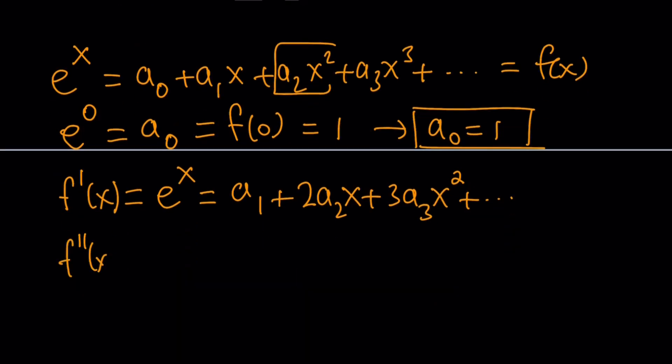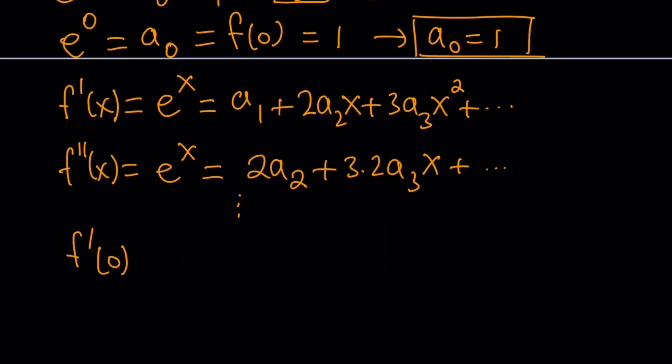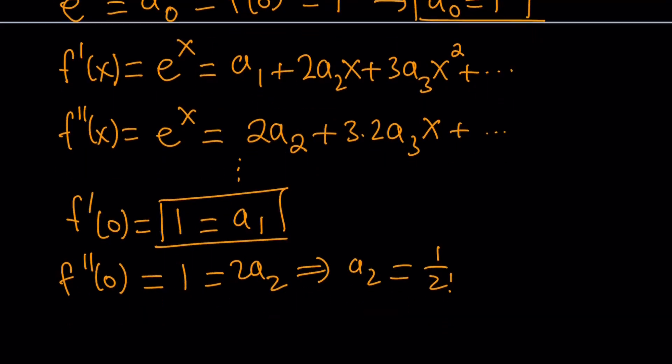This is the first derivative. And then take the second derivative. It's still e to the x, but a sub one disappears. You end up with two a sub two plus three times two. But at the end, we actually want to write it as three times two times one, which is three factorial. And two can be written as two times one, which is two factorial. The factorials play an important role while writing this as an infinite series. And then you're going to start plugging in values like f prime at zero is one, which gives us a sub one. And f double prime at zero is one again, but this is two a sub two. And from here, you get a sub two equals one over two factorial. We also know that a sub zero is one.